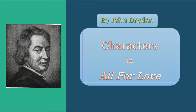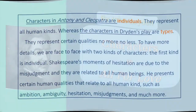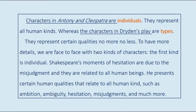In this video, I am going to talk about the characters in John Dryden's All for Love. Characters in Antony and Cleopatra are individuals — they represent all human kinds. Whereas the characters in Dryden's play are types; they represent certain qualities, no more no less.